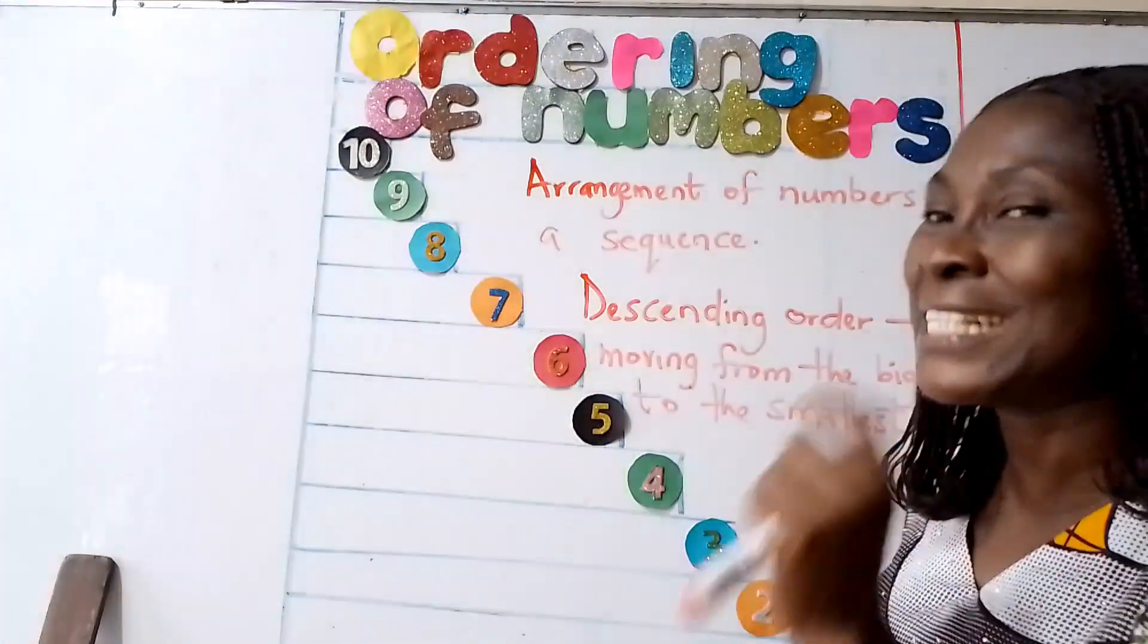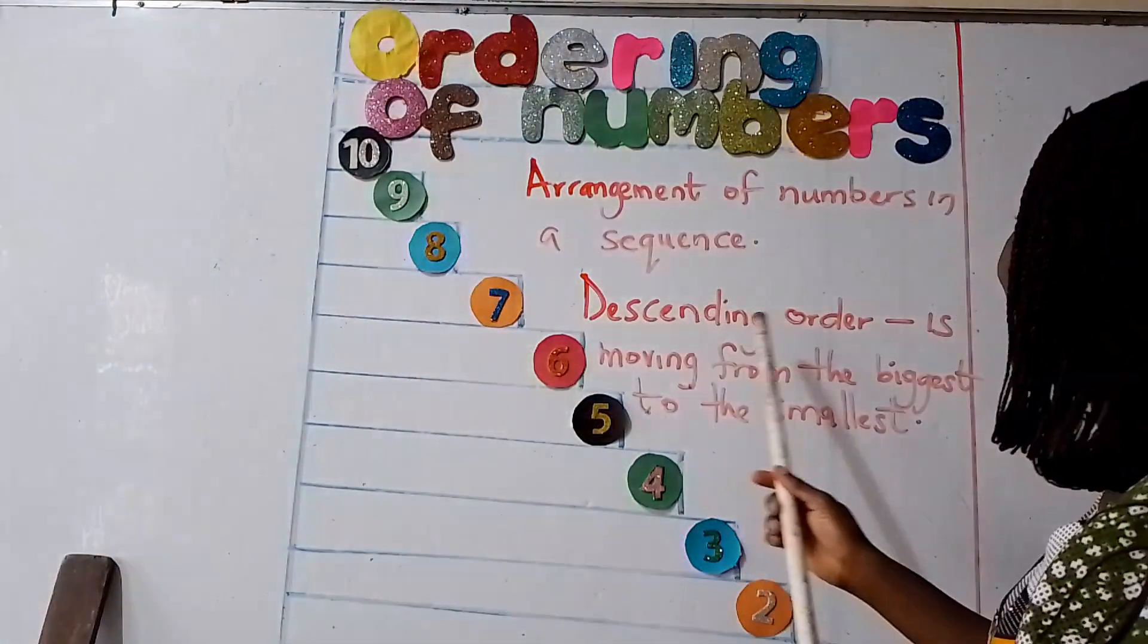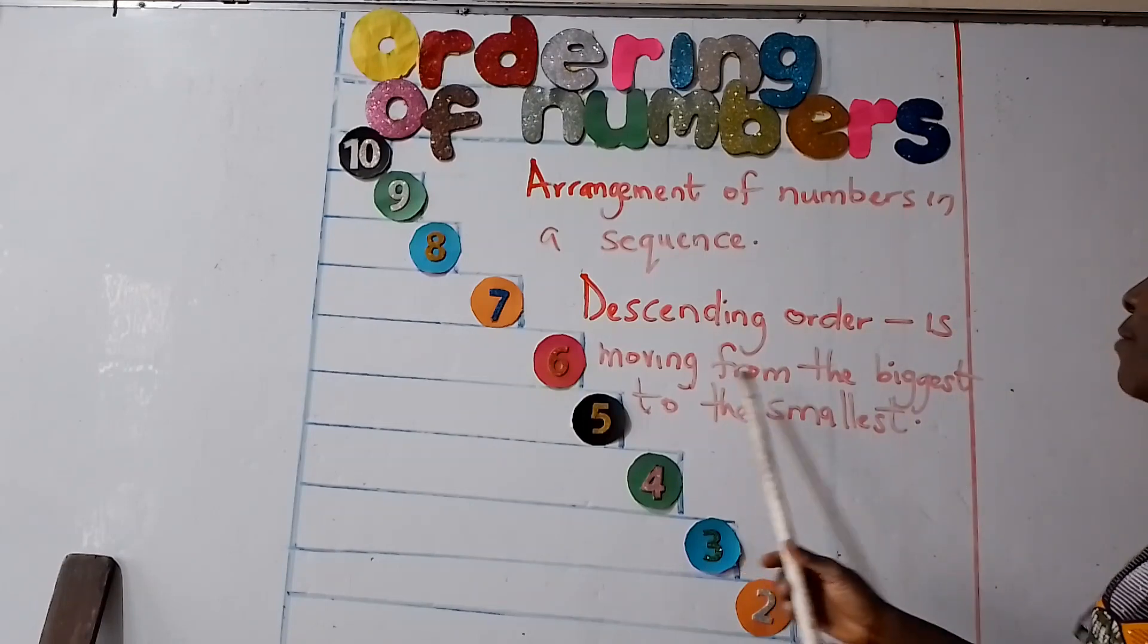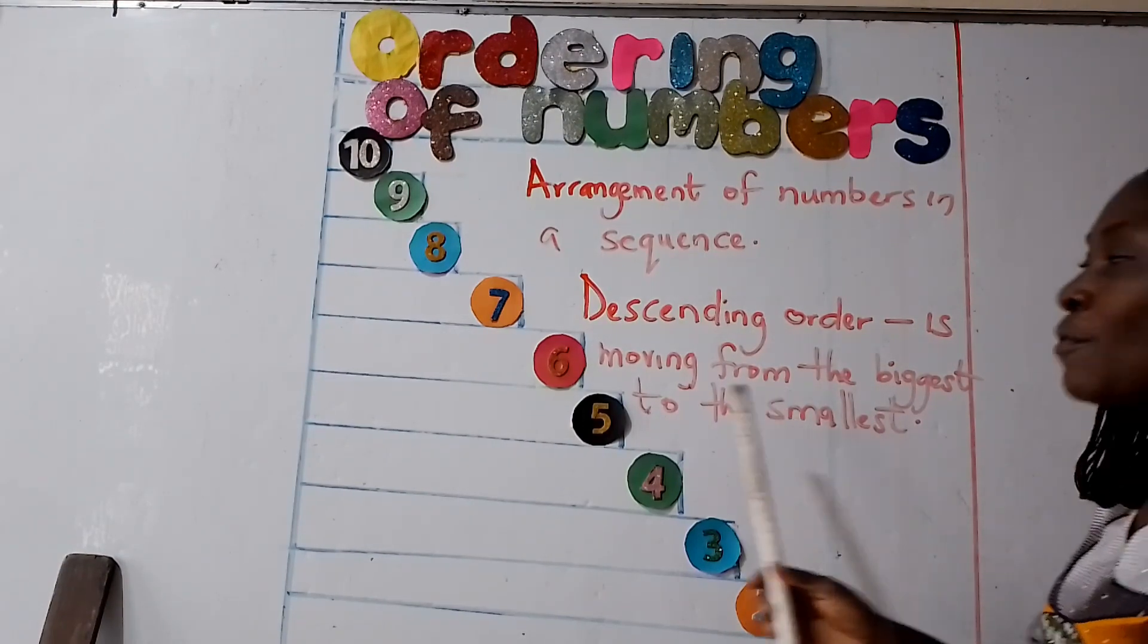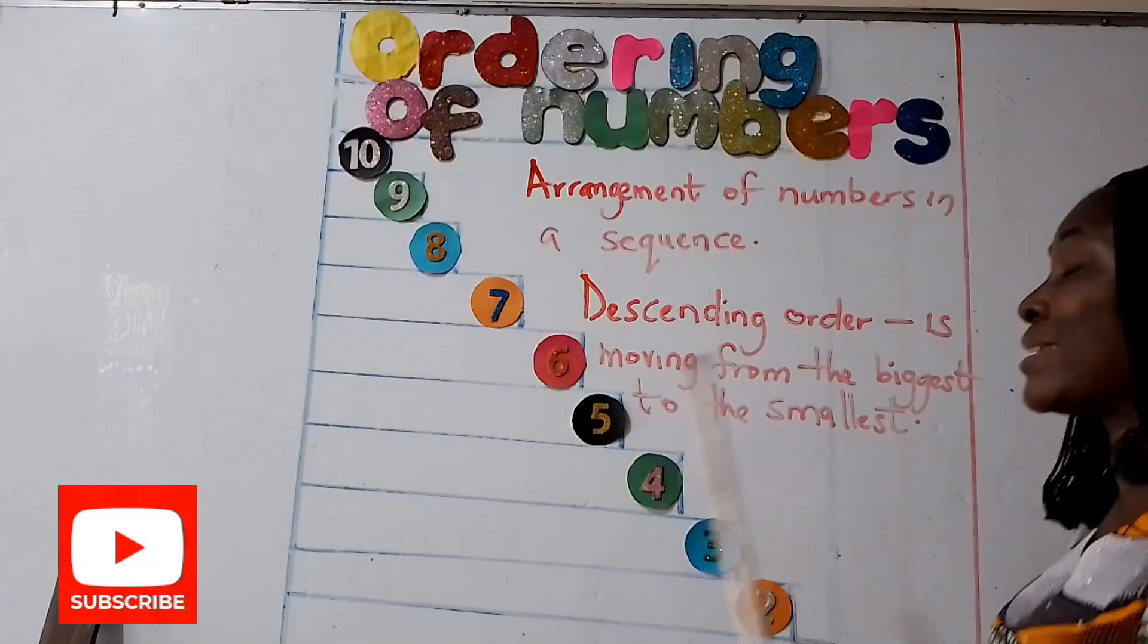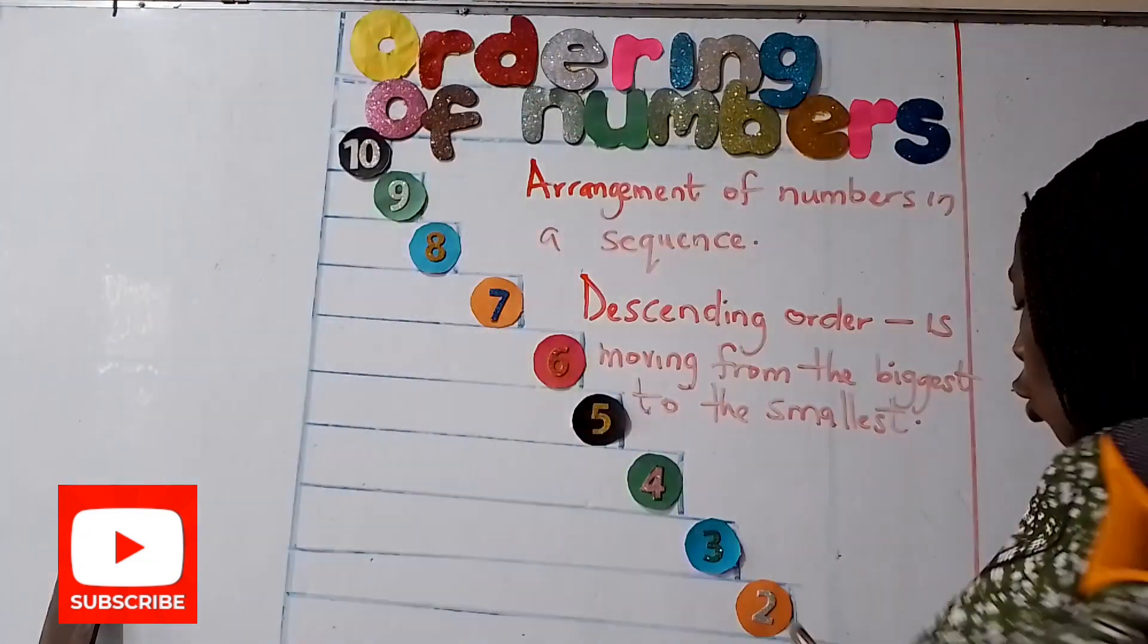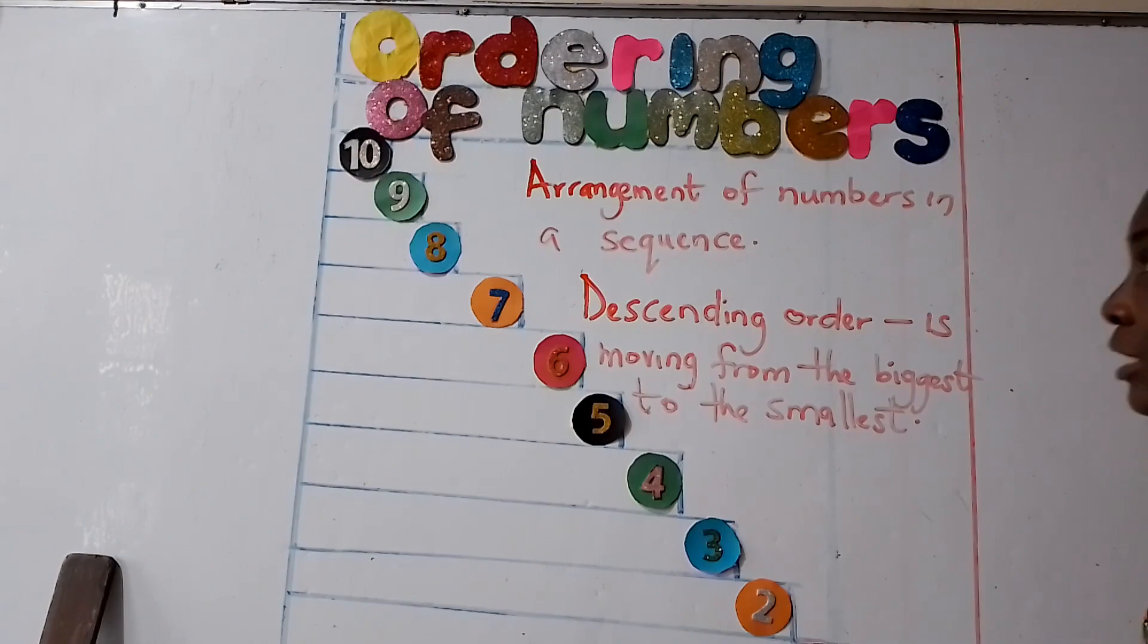Now today we are learning descending order. Descending order is moving from the biggest to the smallest, from the biggest to the smallest. Now that is from 10 to 1. Now count with me.